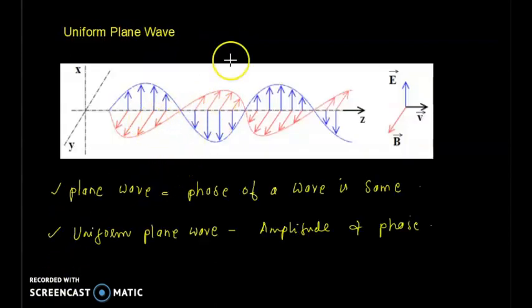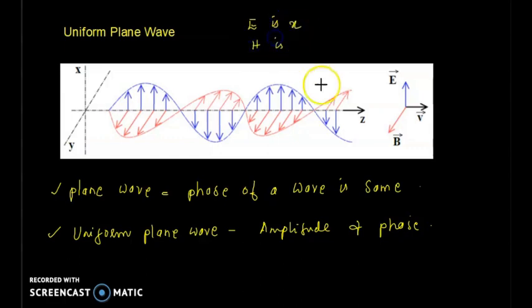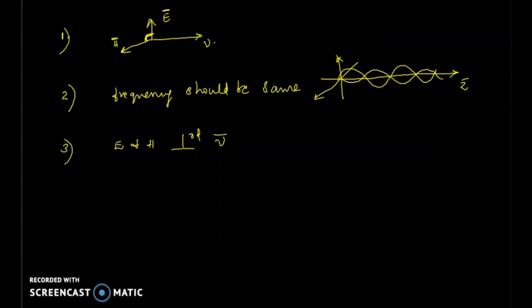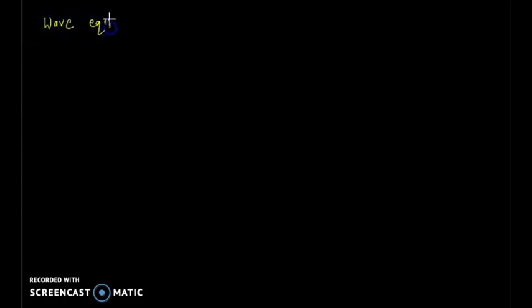From this figure we know that E is in the x-direction, H is in the y-direction — H and B are the same. Then the velocity: the wave is travelling along the z-axis. Last class, we derived the expression for the wave equation for free space.